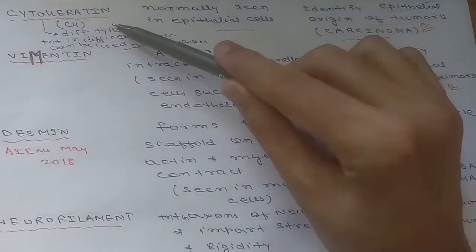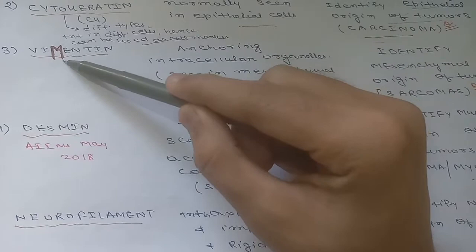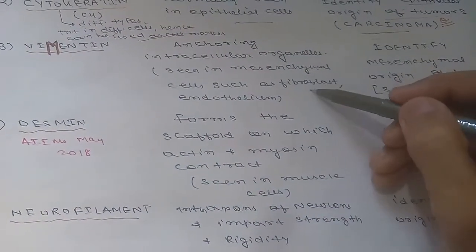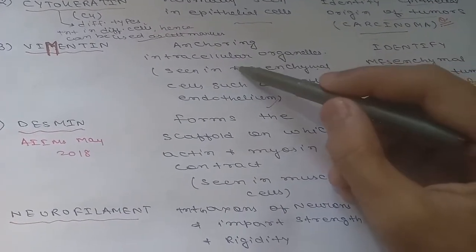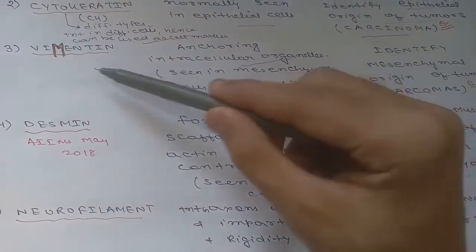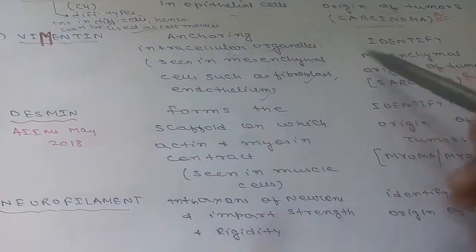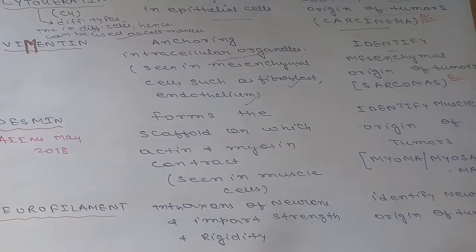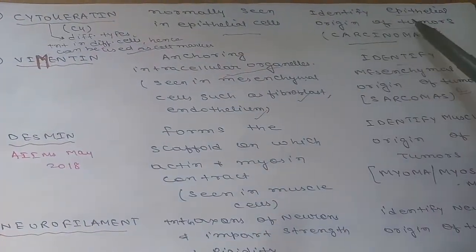The next intermediate filament is vimentin, present in mesenchymal cells such as fibroblasts and endothelium. It helps in anchoring of intracellular organelles. Vimentin is used to identify the mesenchymal origin of tumors, in contrast to cytokeratin which identifies epithelial origin.